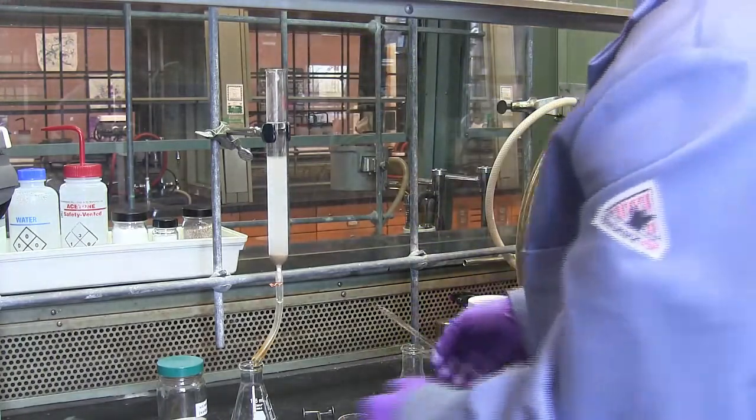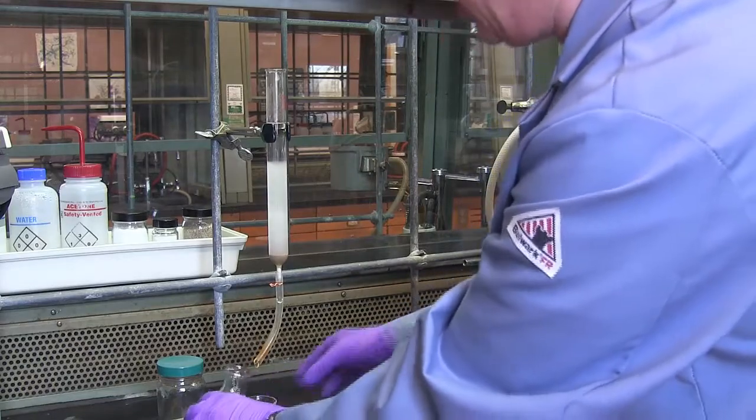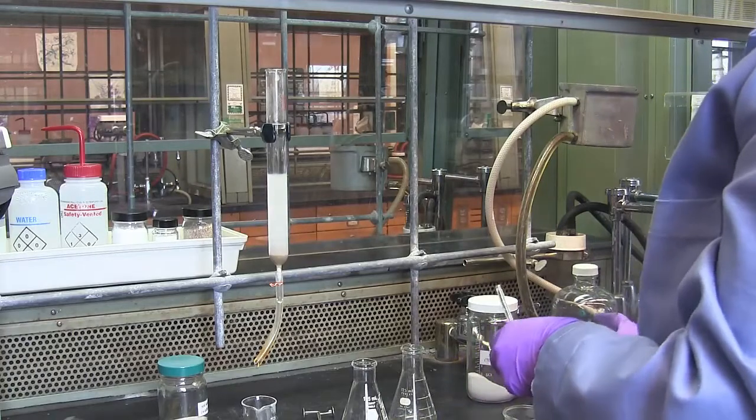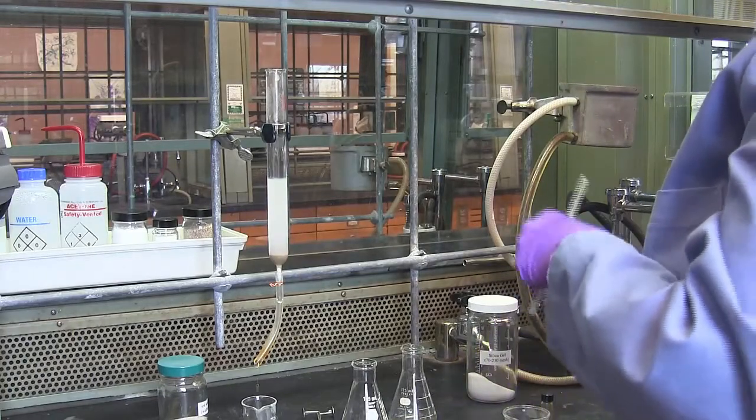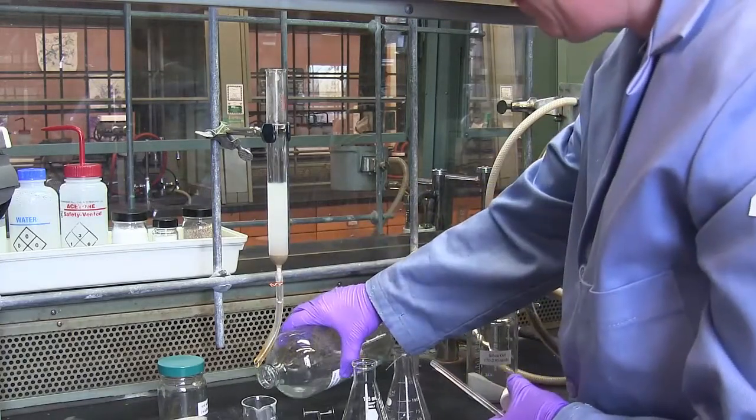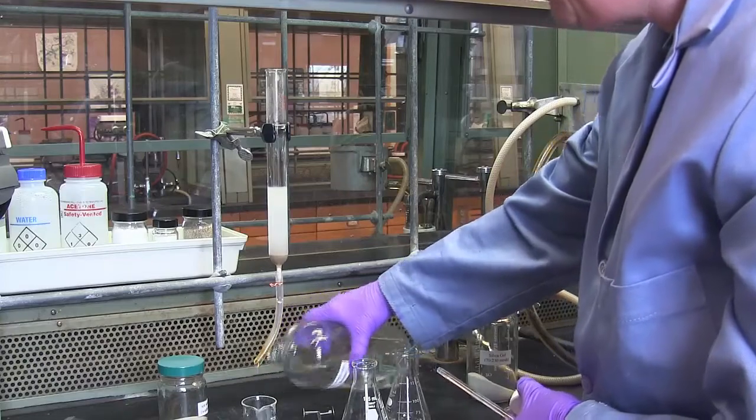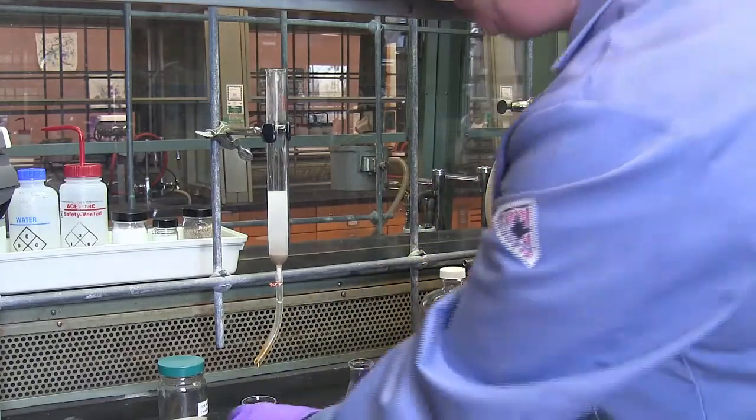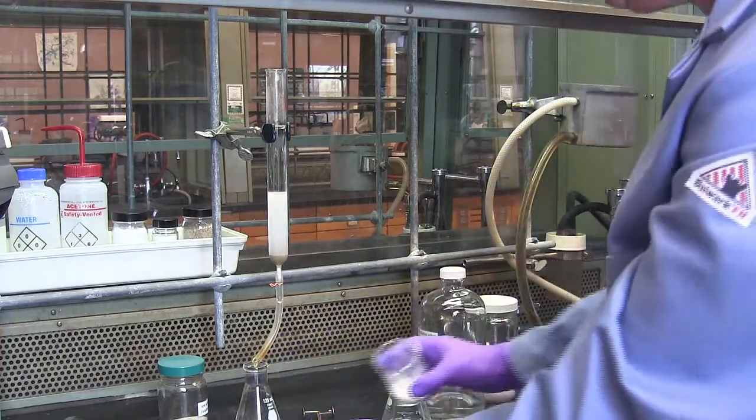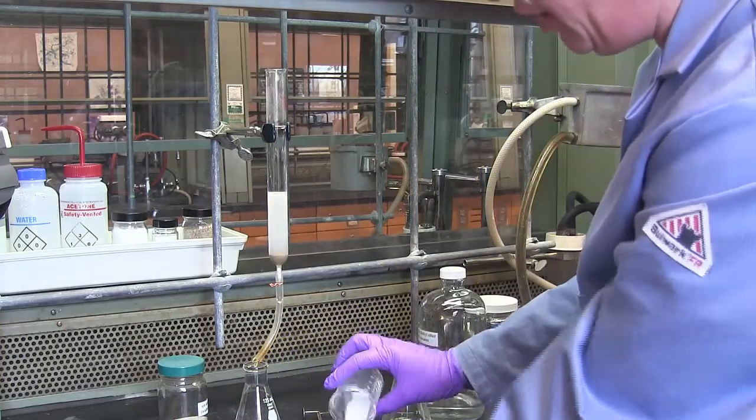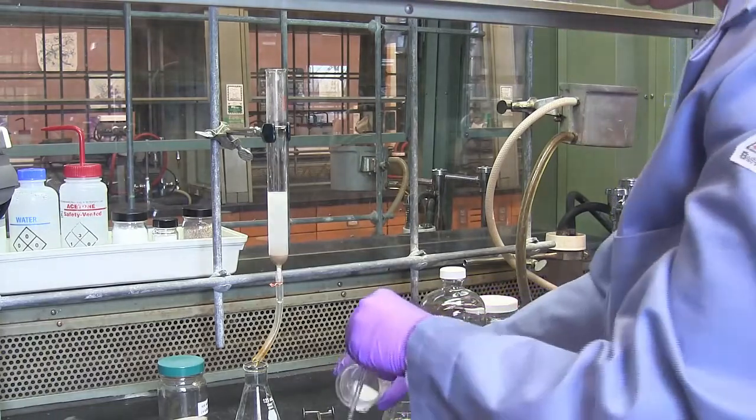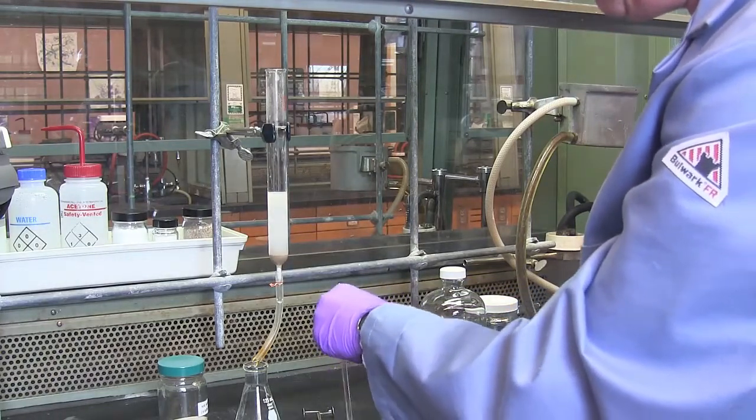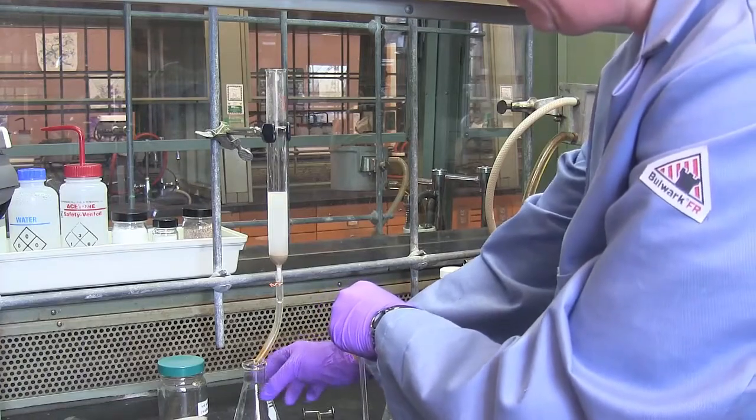You can certainly recycle any of the eluent that drips out of the column, and that is very much encouraged. Once the column begins dripping, try to do your best not to stop the column. Anything that you do that stops the flow will lengthen your lab day. So you want that eluent to continue dripping into the column.